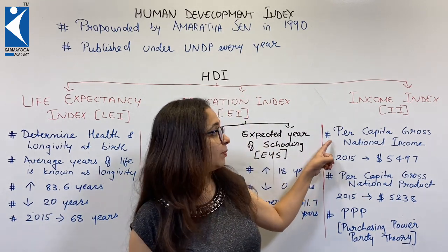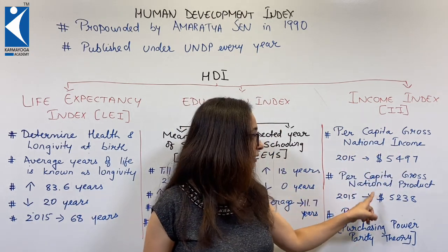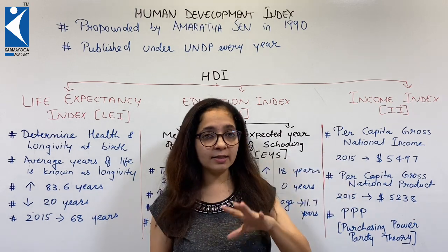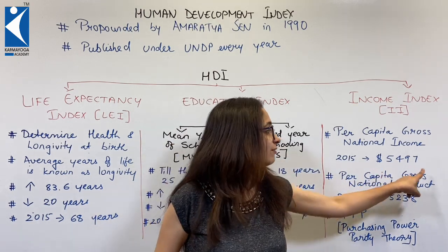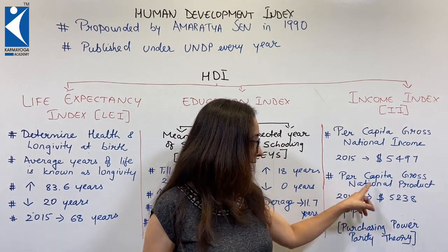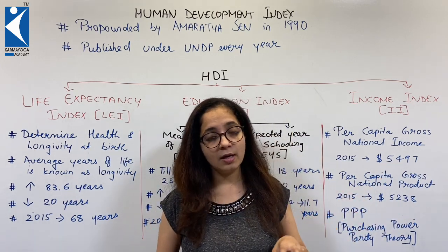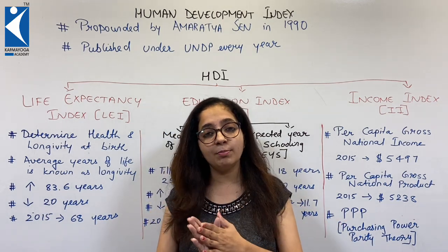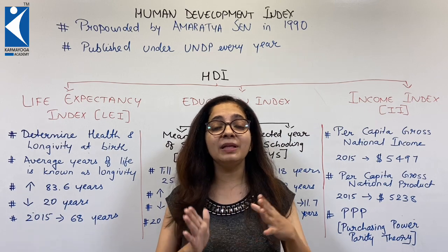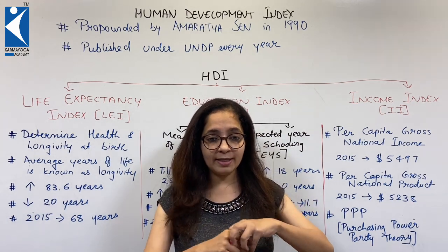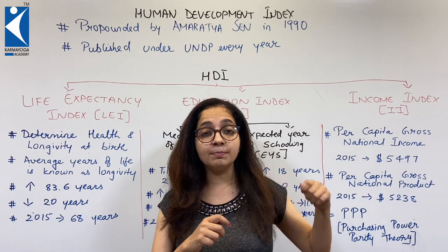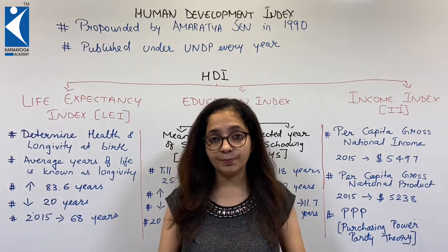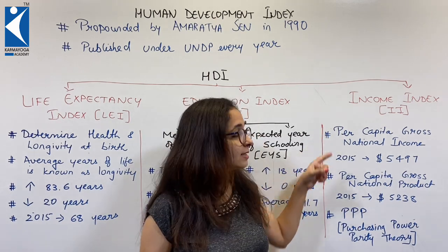Per capita Gross National Income and per capita Gross National Product are used here. In 2015, per head income per year was 5,497 dollars and per capita product was 5,238 dollars. This is based on Purchasing Power Parity theory, widely known as PPP, which shows the capacity of people in any country to purchase — their purchasing power. This is the Income Index.